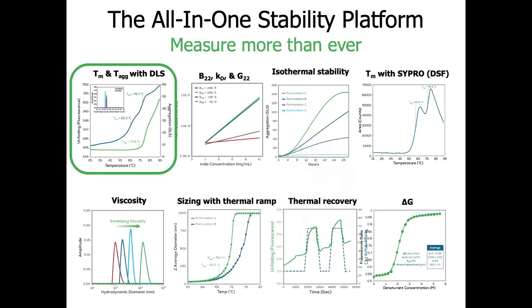Because of the three detection methods inside of the UNCLE, there are many different applications that can be run in this one instrument. TM-TIAG with DLS is our most popular application. Essentially, it looks at the unfolding temperature as you thermal ramp the samples — the TMs — and the aggregation temperature, or the onset of aggregation, which is TIAG. Additionally, it looks at dynamic light scattering information at the initial temperature and the final temperature.